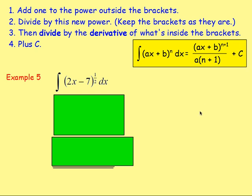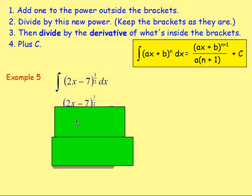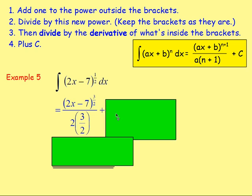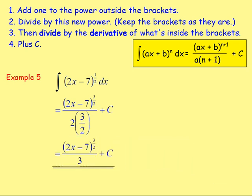Example 5: Integrate (2x − 7)^(1/2). Add 1 to the power — a half becomes 3/2 — giving (2x − 7)^(3/2). Divide by that new power of 3/2. Also differentiate what's inside the brackets: 2x − 7 differentiates to 2, so divide by 2 as well. So you divide by 2 and by 3/2. The 2 times 3/2 simplifies — the divide by 2 and multiply by 2 cancel — leaving just over 3. So the answer is (2x − 7)^(3/2) over 3, plus c.